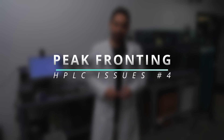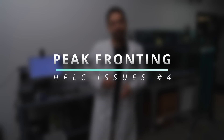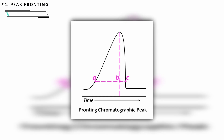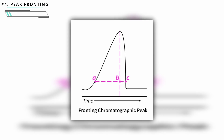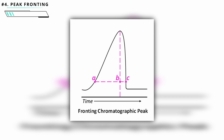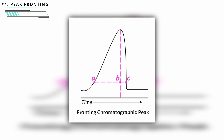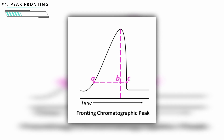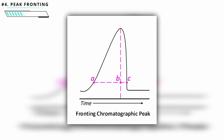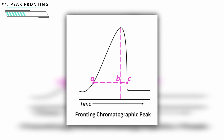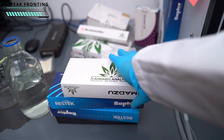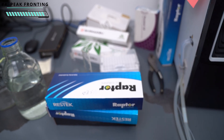Number four is peak fronting — the opposite of peak tailing, where you see a tail in front of the peak. This is caused by loading too much sample, so decrease the amount you're loading and that should fix it. If you definitely need to load that amount, you'll need to use a bigger column with increased loading capacity.